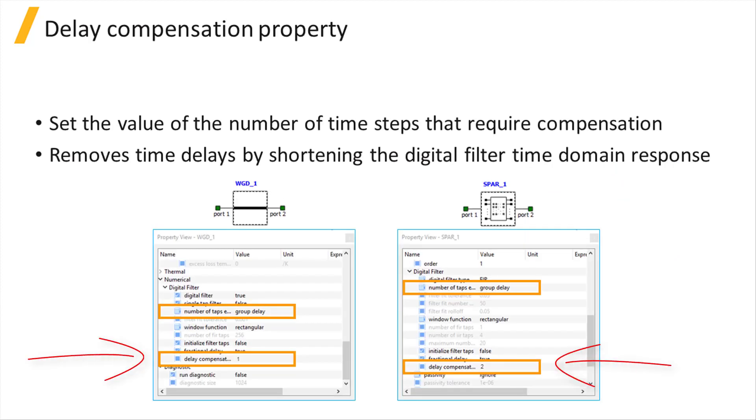The Delay Compensation Digital Filter property is available when the Number of Taps Estimation property is set to Group Delay, as shown here for the Straight Wave Guide and S-Parameter elements.